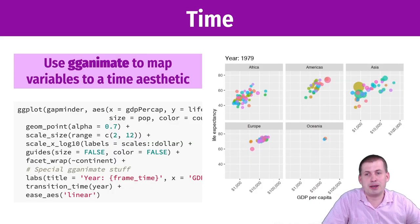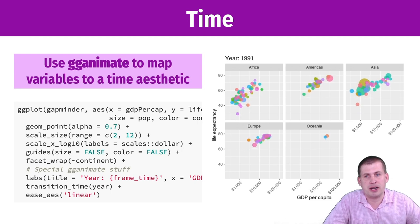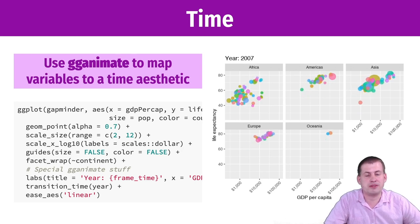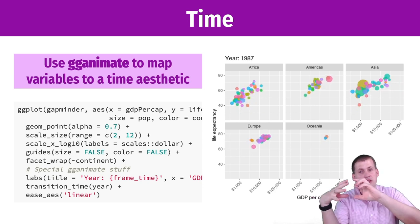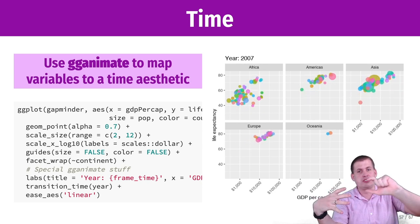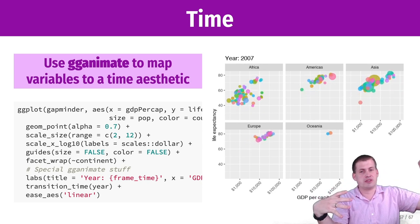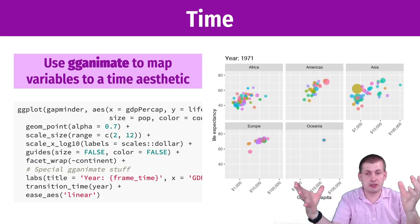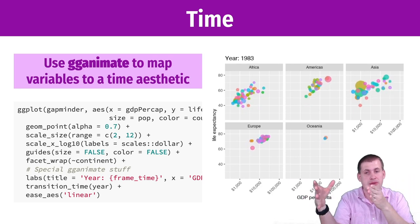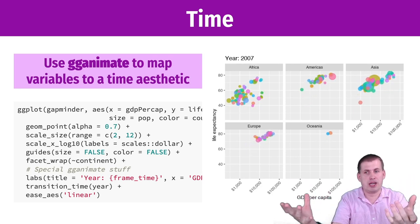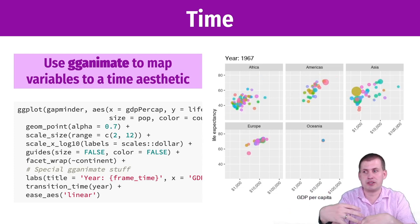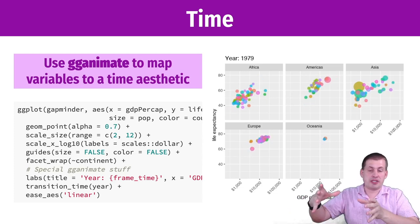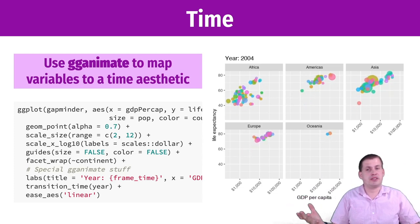For instance, the Gapminder animation that you did for your reading used an animation to show changes over time, but also had continent mapped onto the graph and population size mapped onto the graph. So it still had those elements, but it had the additional element of time.